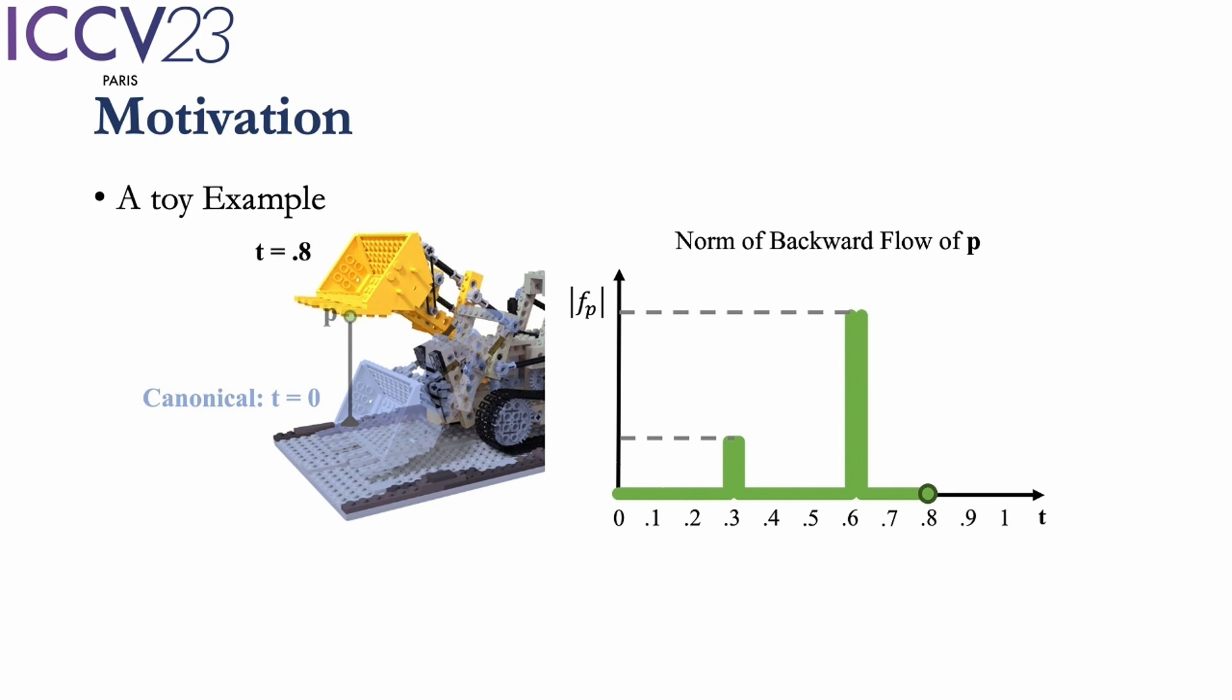The right figure shows the change of the backward flow of point P, with time on the horizontal axis and the length of the backward flow on the vertical axis. We can see that this curve has two sharp peaks, which would be difficult for fitting.